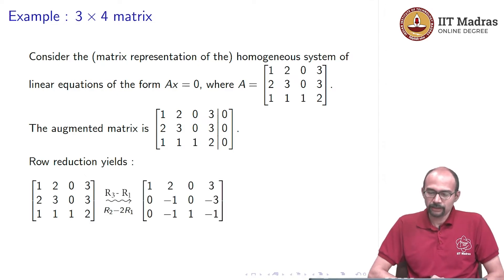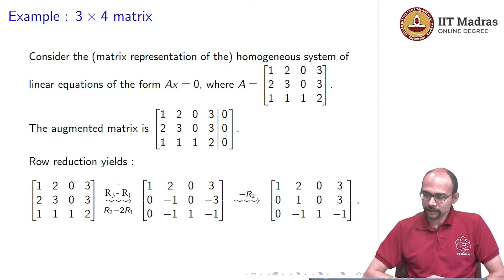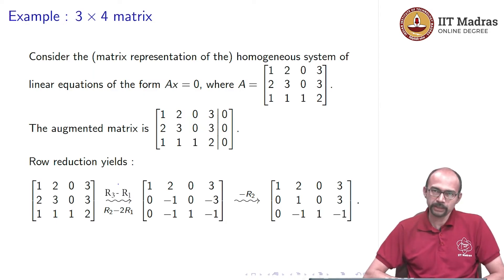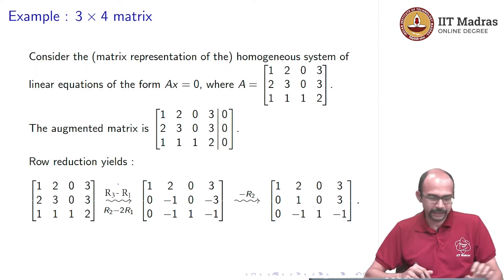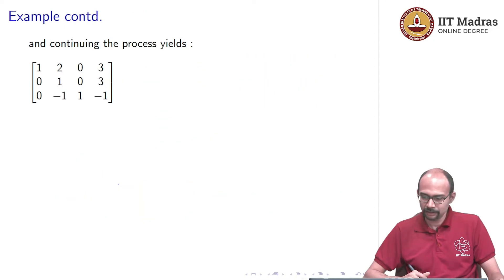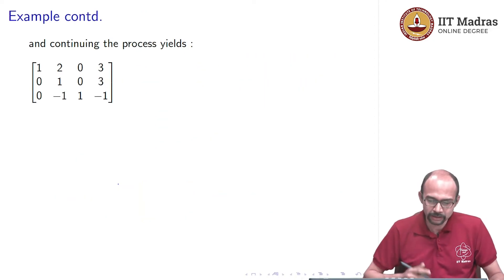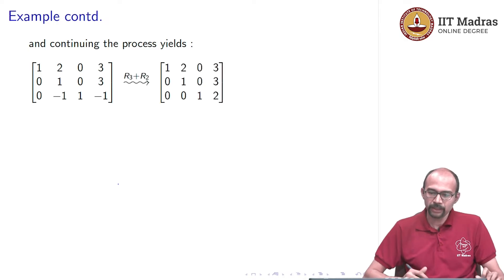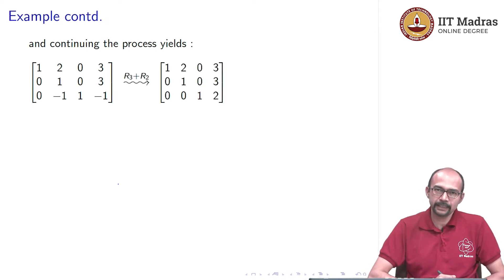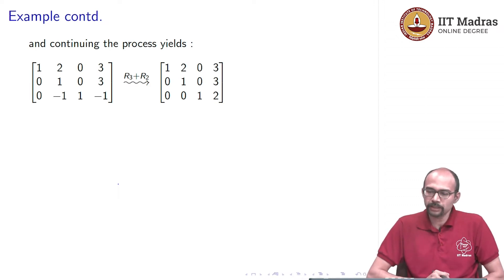If we do that, we have swept out our first column, everything below that one. Now let us continue with the process. We want a 1 in the 2,2 position, and indeed we can multiply the second row by minus 1 to obtain that. So we get 0 1 0 3 in the second row, everything else remains the same. Continuing, we sweep everything in the second column below the 1, and we get 1 2 0 3, 0 1 0 3, 0 0 1 2.